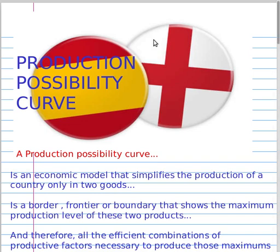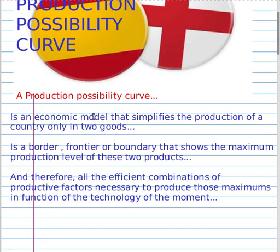A production possibility curve is an economic model that simplifies the production of a country or economy to only two goods, as you will see: Good X and Good Y.